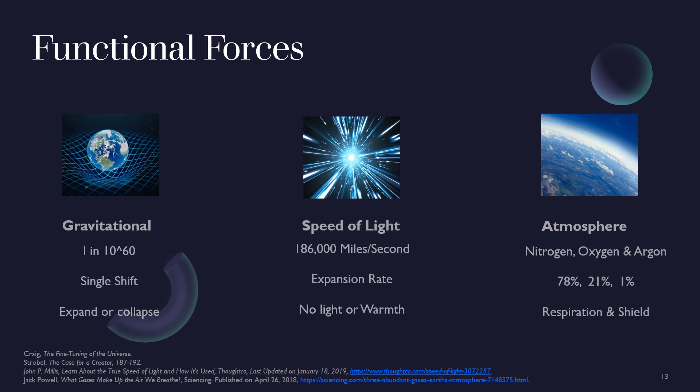To touch on the foundational principles by which each of the prior pieces of evidence is upheld, our last topic is to discuss the functional forces of the universe. While there are many, we will only be covering the gravitational force, the speed of light, and the Earth's atmosphere. In the universe, the gravitational constant is precise to one part in 10 to the 60th power, which means that if there is a single shift higher or lower in the gravitational force of the universe, it would either expand too widely or collapse in on itself, both of which would make life impossible.